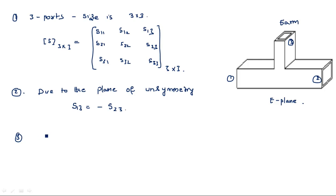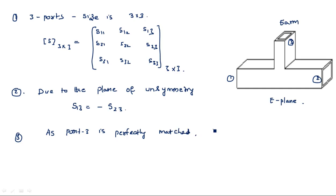Next, apply the second property: port three is perfectly matched. As port three is perfectly matched, S33 = 0. This point is common.